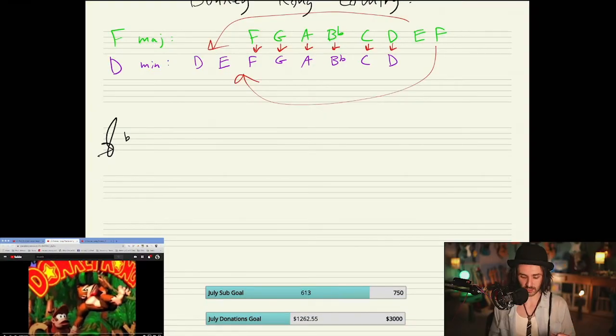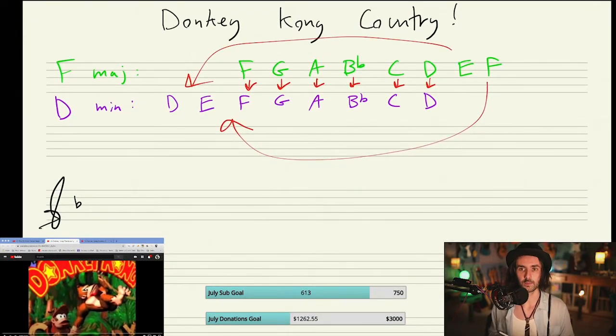They share the same key signature, which means the same genetic code. An analogy I like to use when talking about relative keys versus parallel keys is this: relative keys